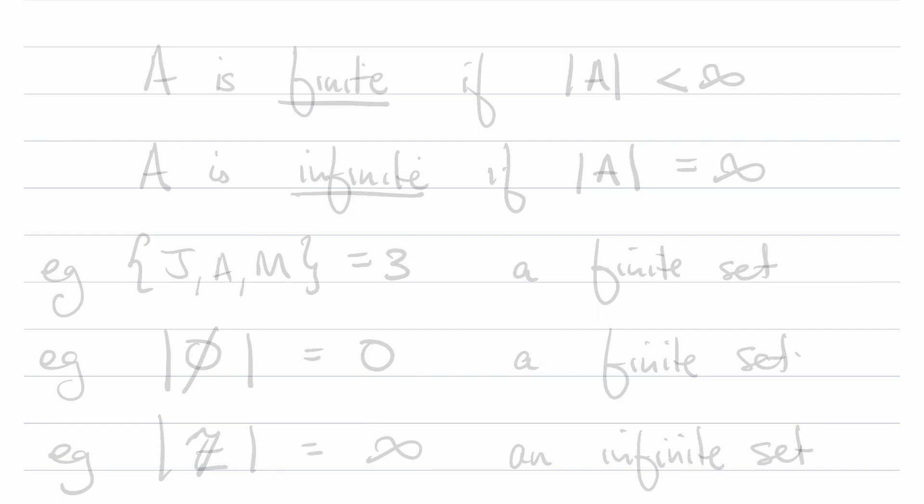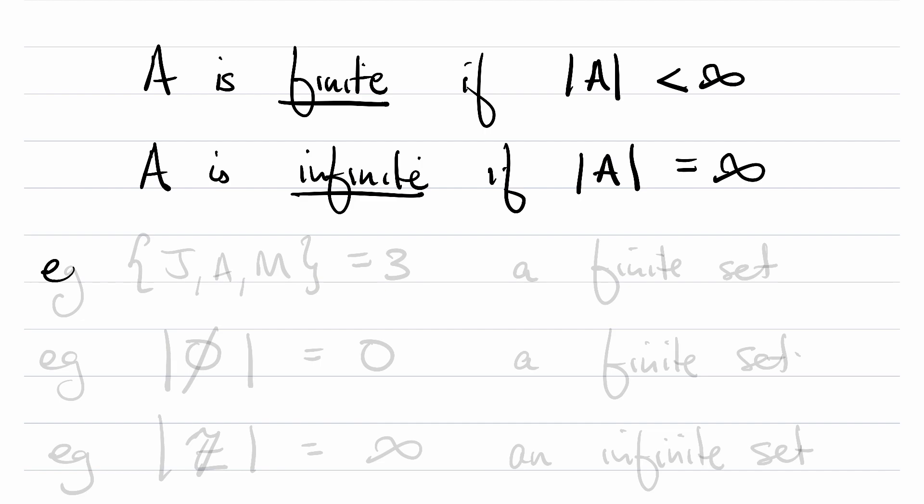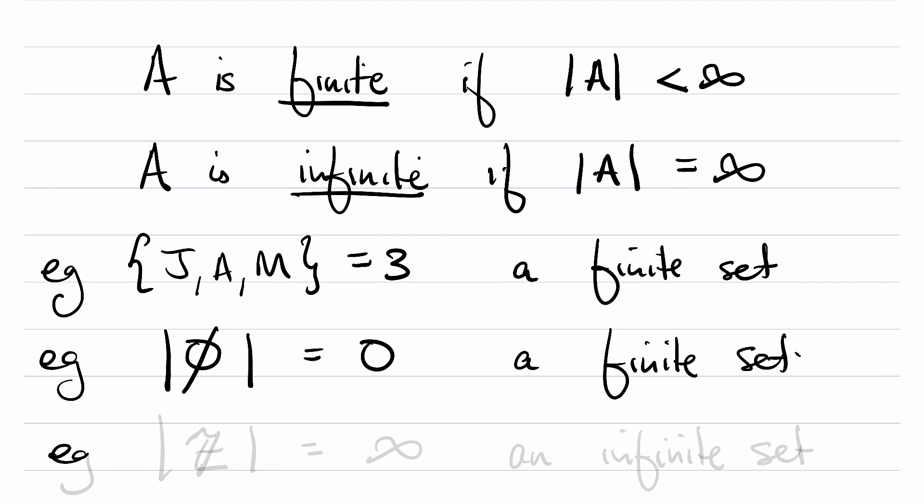A is said to be a finite set if the cardinality of A is less than infinity. So if there's a finite number of things in the set, then the set is called finite. And similarly, as you expect, A is infinite if the cardinality of A is infinity. Example: The cardinality of the set that includes the letters J, A, and M is three, and this means that it is a finite set. The cardinality of the empty set is zero, making it also a finite set. And the cardinality of the integers is infinity.